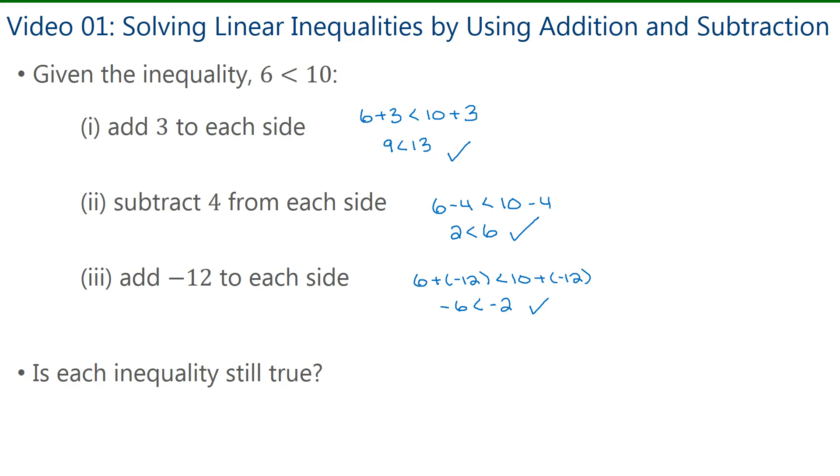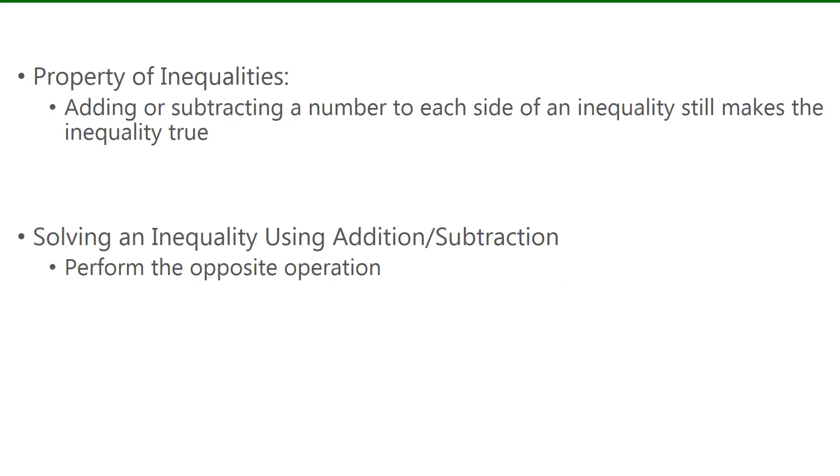So that leads us to the property of inequalities, which states that adding or subtracting a number to each side of an inequality still makes the inequality true, just like an equation.